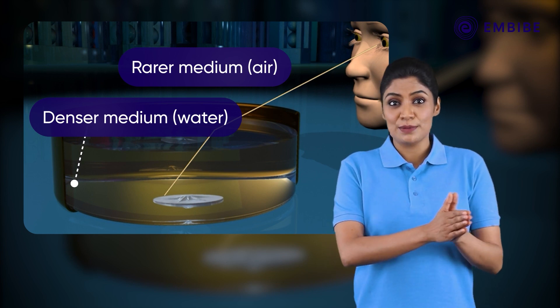This happens due to the bending of light. These experiments show that the ray of light changes its direction when it travels from one medium to another. The bending of light rays when they travel from one medium to another is called the refraction of light. Such events occur in transparent media.